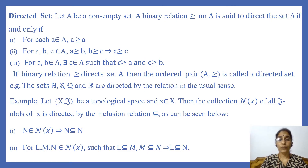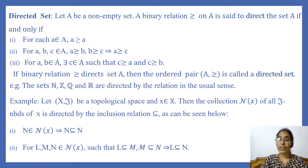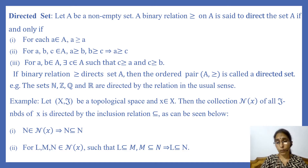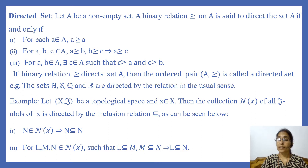To define a net, it is required to define a directed set. Let A be a non-empty set. A binary relation — denoted here by ≥ — directs the set A if and only if three conditions are satisfied. First: for each a in A, a ≥ a, i.e., the relation is reflexive. Second: for a, b, c in A, a ≥ b and b ≥ c implies a ≥ c, i.e., the relation is transitive.